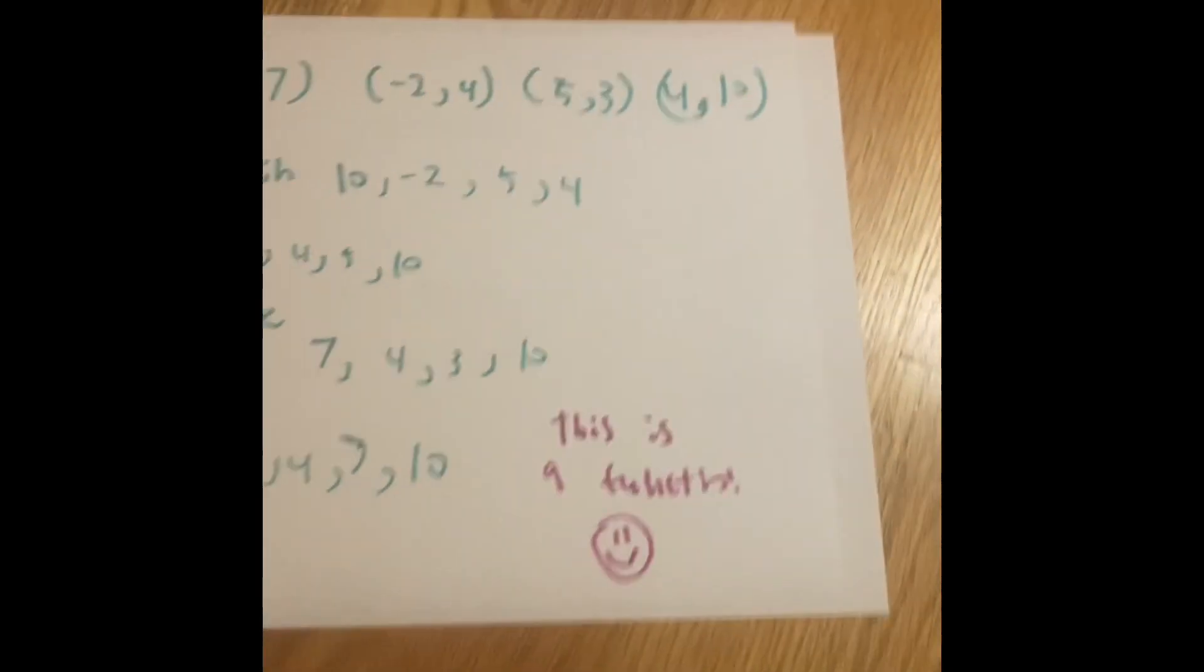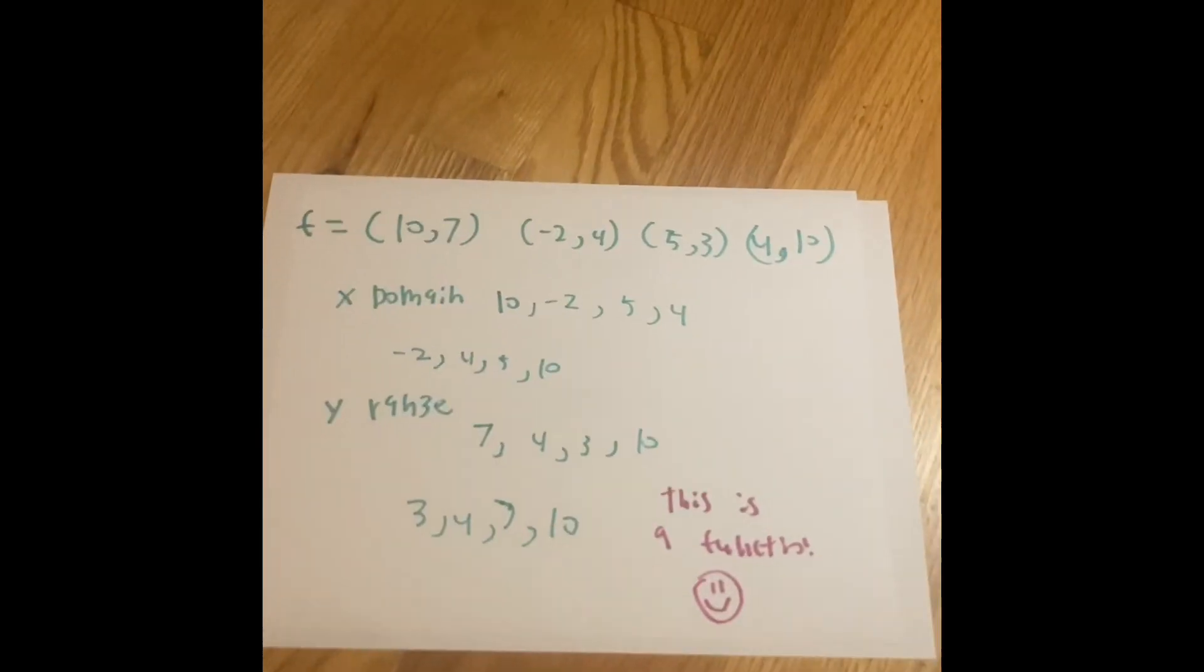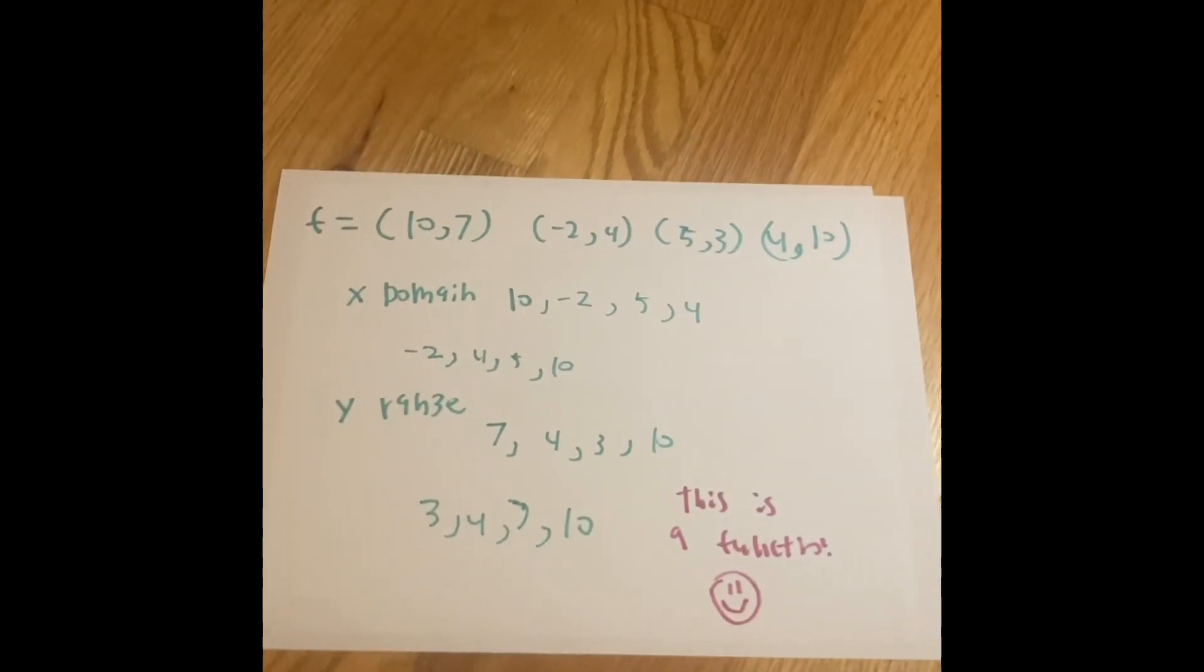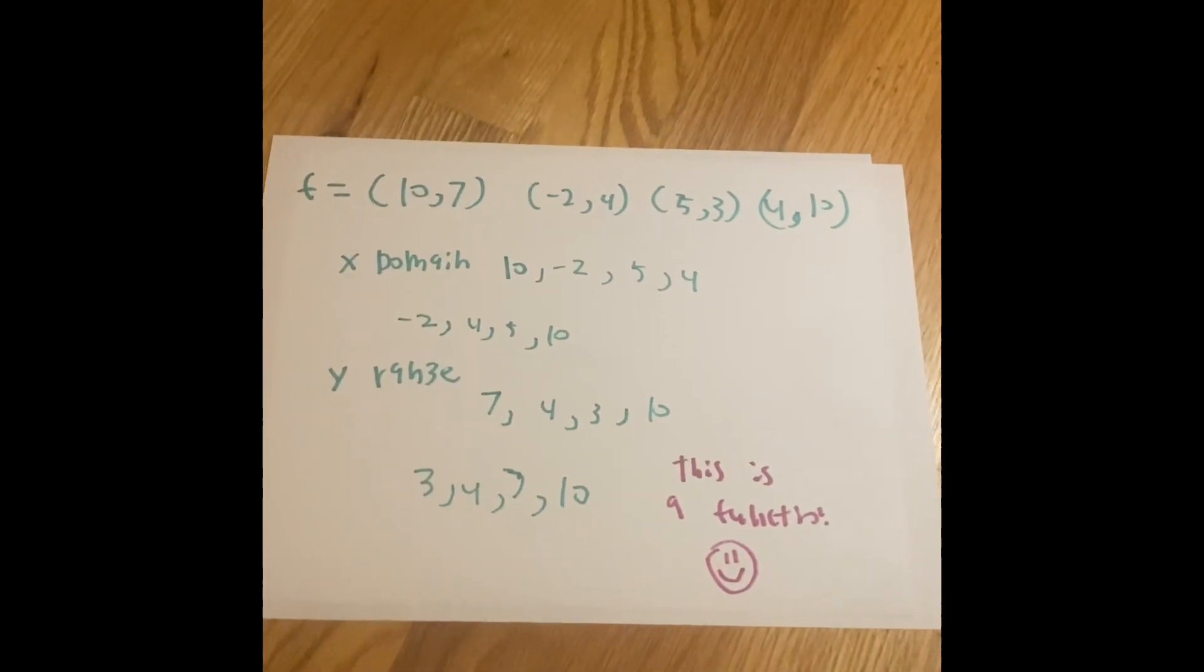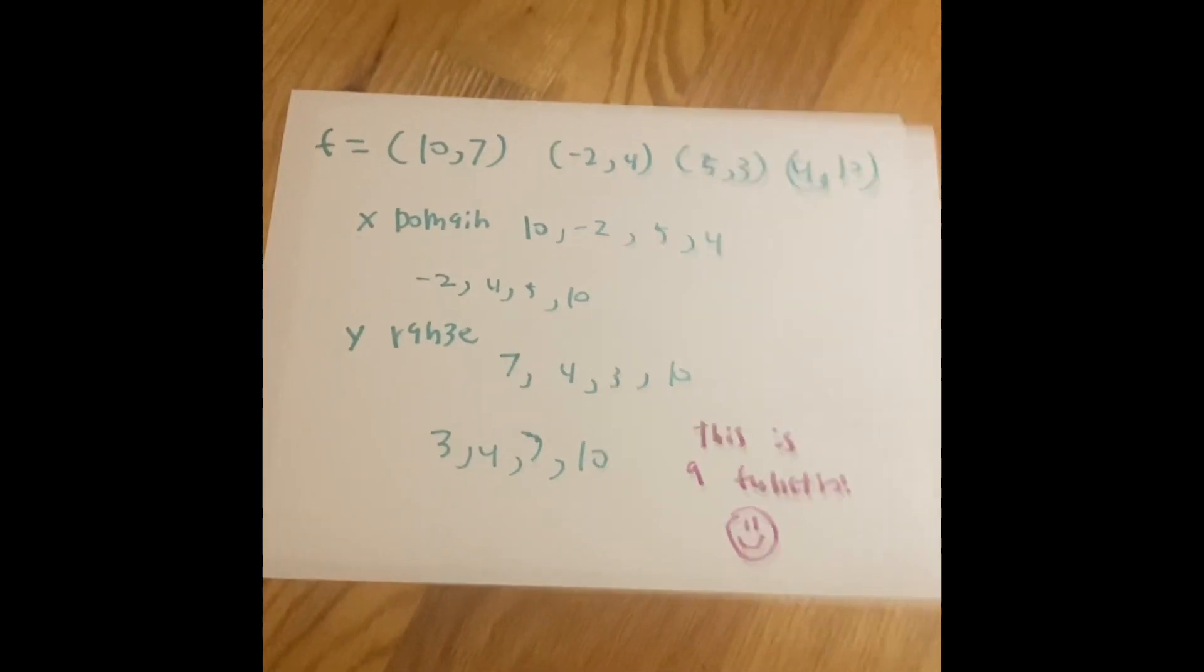The reason why it's a function is, there's one x input into a y value. And not only that, it passes the vertical line test on a graph. It's visually shown.